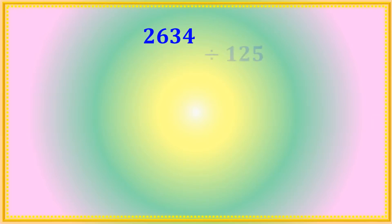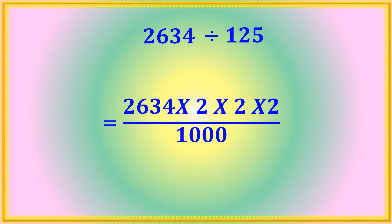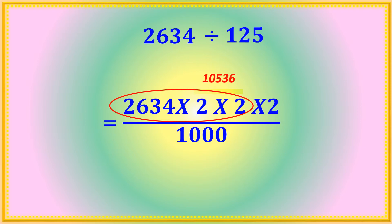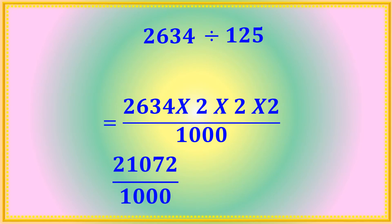Let me do one more example: 2634 divided by 125. We compute 2634 × 2 × 2 × 2. Multiplying 2634 by 2 you get 5268. Again multiplying by 2 you get 10,536. Then 10,536 multiplied by 2 gives 21,072. So we have 21,072 divided by 1000.